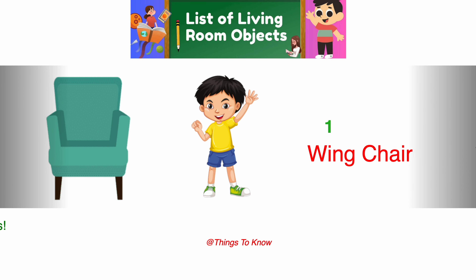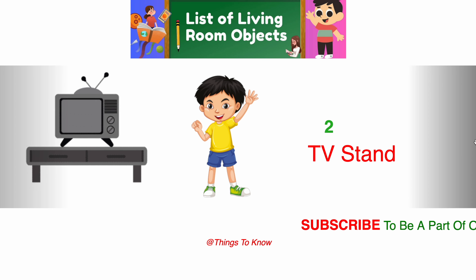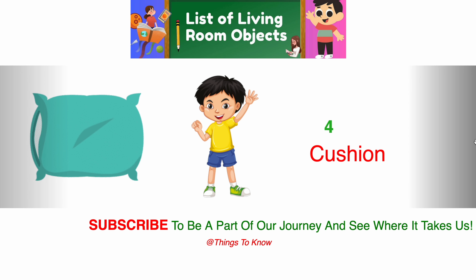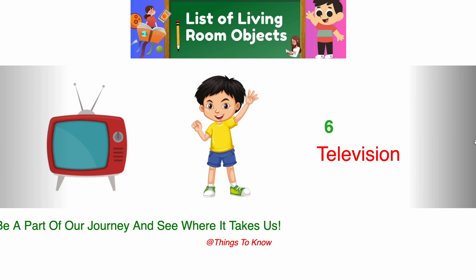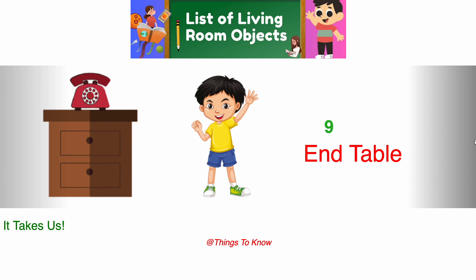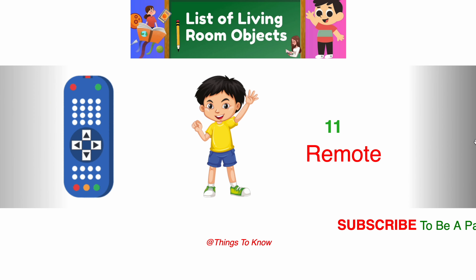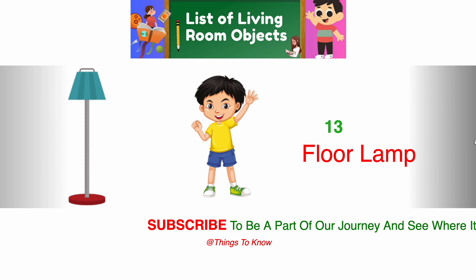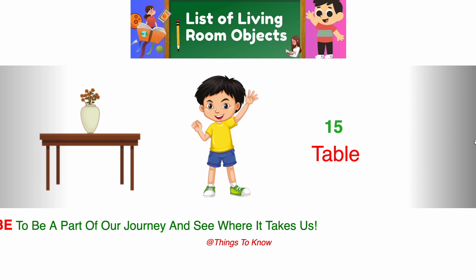List of living room objects: one wing chair, two TV stand, three sofa, four cushion, five telephone, six television, seven speaker, eight tea set, nine side table, ten fireplace, eleven remote, twelve fan, thirteen floor lamp, fourteen carpet, fifteen table.